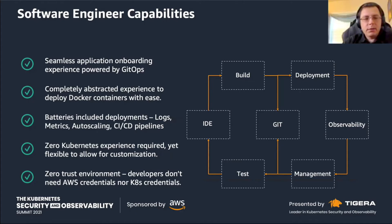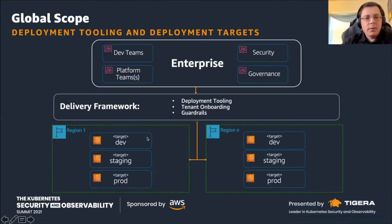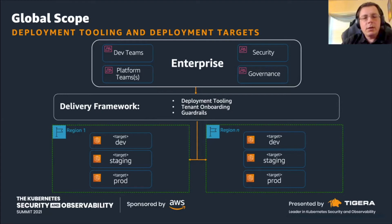Thank you, Carmen. When talking about a shared services platform, it's important to account for the different dimensions and scopes. At the global scope, there is an enterprise with many business units, organizational units, lines of business, plus dev teams, security, governance, and platform teams. All of them require a delivery framework with deployment tooling and clear processes to onboard tenants with guardrails in place. That framework enables software delivery to various regions and deployment targets — dev, staging, and prod — multiplying the complexity. The downside of not implementing a platform like this is lack of agility, as an unsmooth system produces bottlenecks.